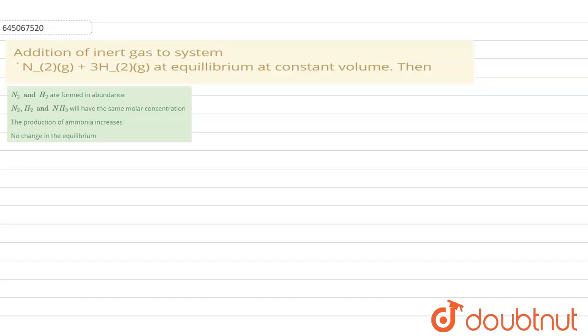Hello everyone, in this question we have to find out the effect of addition of inert gas to the system of equilibrium at constant volume. Now the given reaction is N2 plus 3H2 gives you twice of NH3, and it is given that volume is constant.